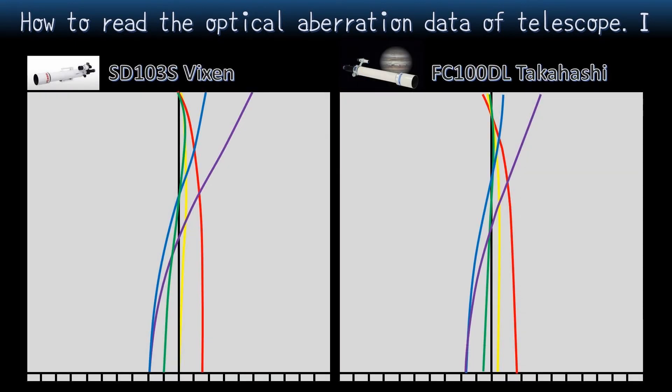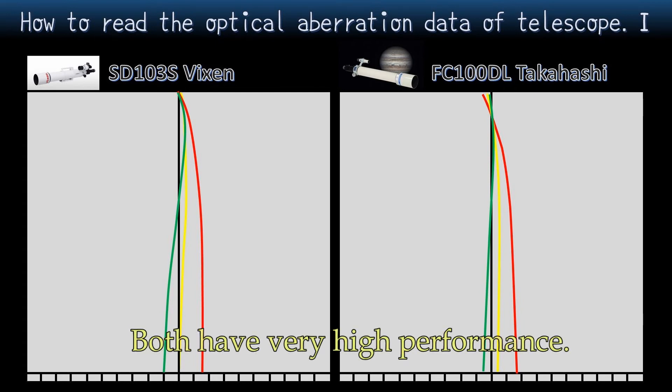Okay, let's compare. At the first, Vixen versus Takahashi. I placed the graph of SD-103S to the left and FC-100DL to the right. Let's focus on yellow, red, and green curves. Even if we compare these, they are all similar. So both have very high performance.